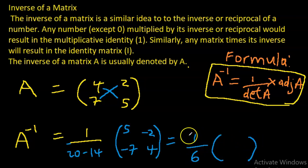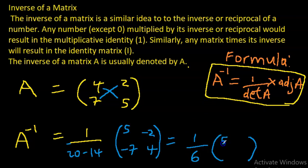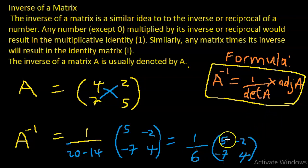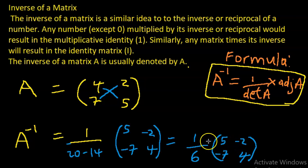So the inverse is 1 over 6 times the adjoint. Usually we leave our answer in this form, because if we were to divide each term by 6 we might end up with awkward decimals. So when the terms don't divide out neatly, we normally just leave the answer in that fractional form.